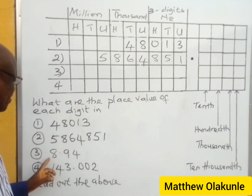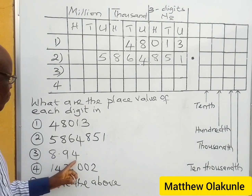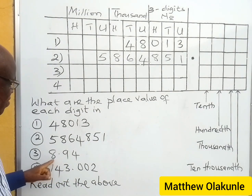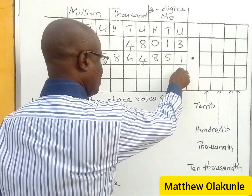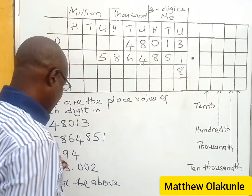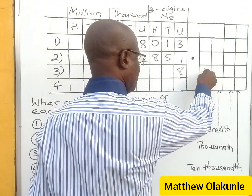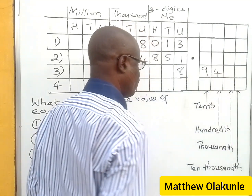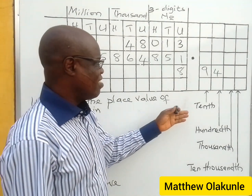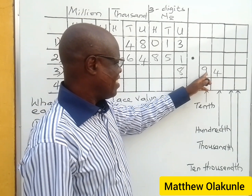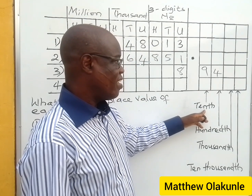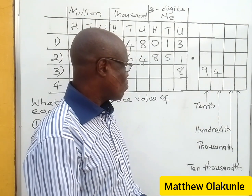Now look at the third one: 8.94. You start here because this is the whole number part. Eight is the whole number, so you put eight in the whole number column. Then you have nine and four after the decimal point. In this case, this nine is nine-tenths — that's nine over ten.